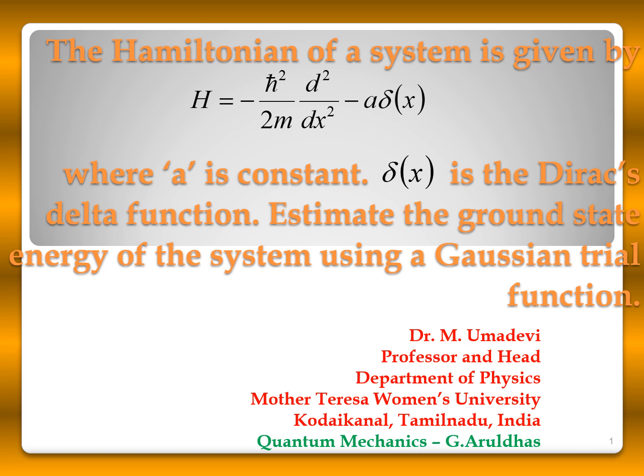Now we will see a problem in quantum mechanics. The Hamiltonian of the system is given by H = −(ℏ²/2m)(d²/dx²) − a·δ(x), where a is a constant and δ(x) is the Dirac delta function. We need to estimate the ground state energy of the system using a Gaussian trial function. This problem is taken from Quantum Mechanics by Aruldas.